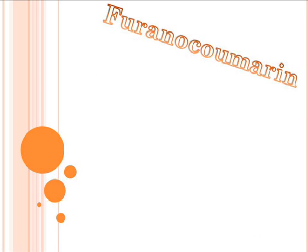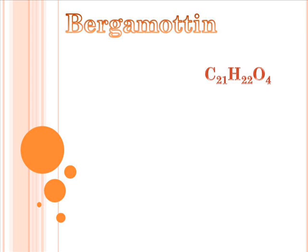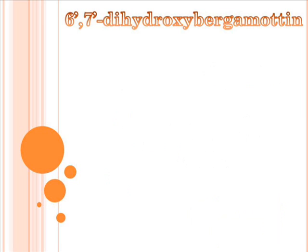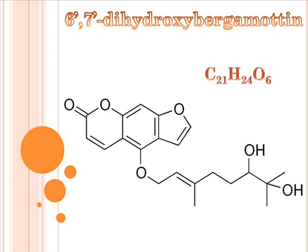There are two types of furanocoumarins found in grapefruits. The first type, bergamotin, with chemical formula C21H22O4, was originally purified from bergamot oranges, another type of citrus fruit. The second type is related to bergamotin; its name is 6,7-dihydroxybergamotin, and the chemical formula is C21H24O6.